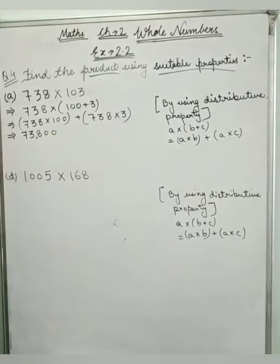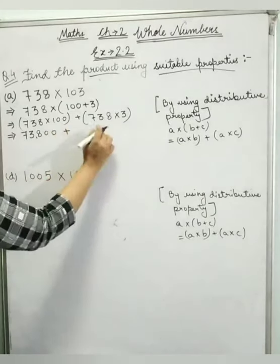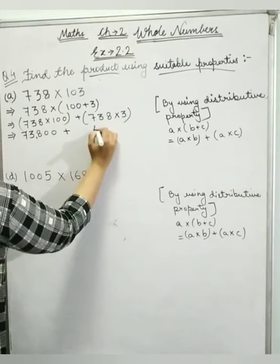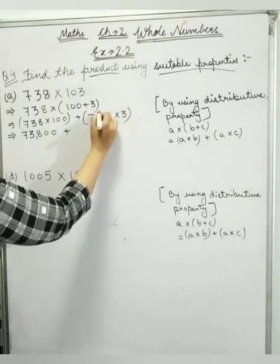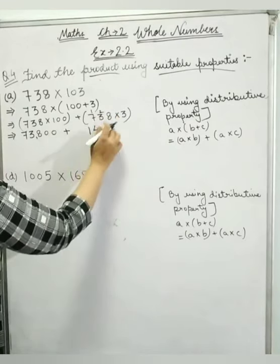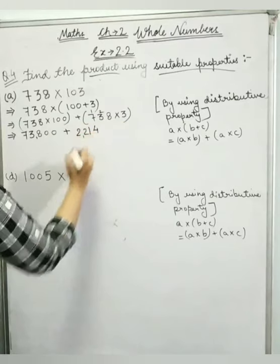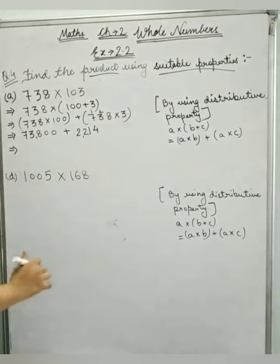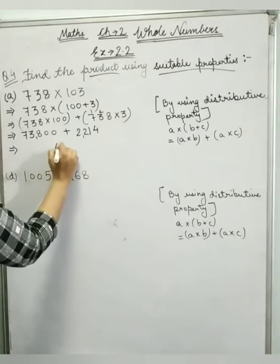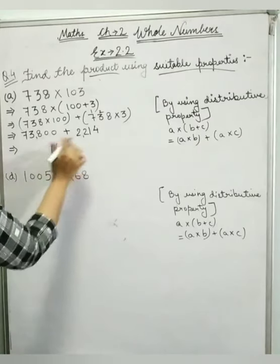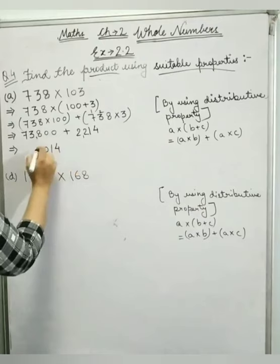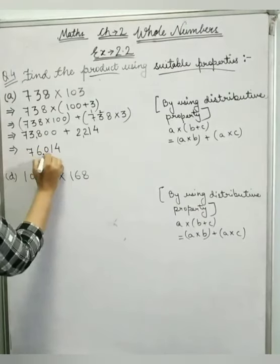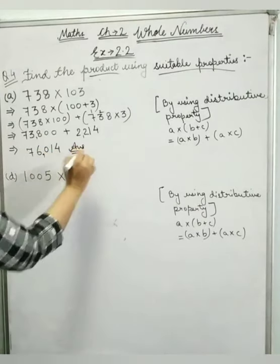738 into 100 gives 73,800, plus 738 into 3 gives 2,214. Now adding these together: 73,800 plus 2,214 equals 76,014.